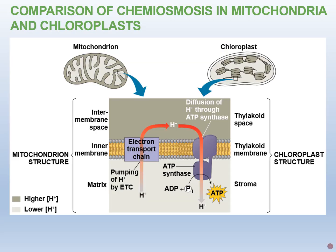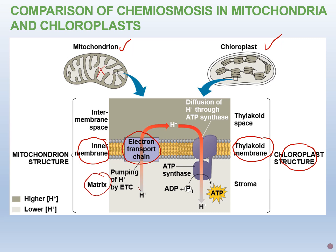Since we have electron transport chains in both the chloroplast and mitochondria, it's useful to see how they're similar. The electron transport chain in mitochondria is found in the cristae, the inner membrane of the mitochondria, and in chloroplasts it's found in the thylakoid membrane. In both cases, during electron transport, protons are being pumped from one side of the membrane to the other. In mitochondria, they're pumped from the matrix to the intermembrane space.